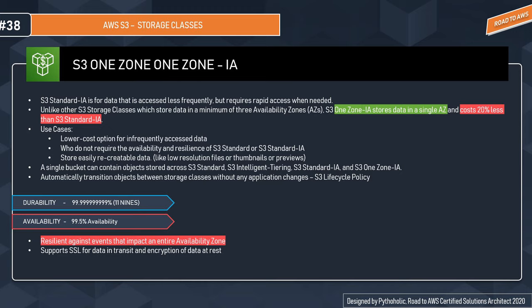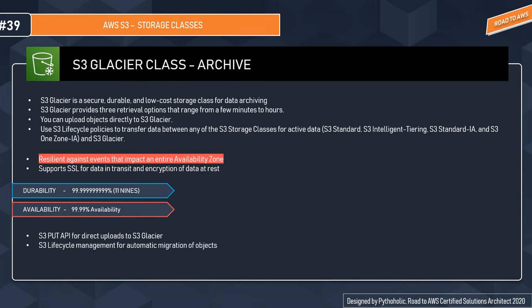S3 Glacier is a secure, durable, and low-cost storage class for data archiving. Archiving refers to data you want to preserve for a longer period — like hospital or government historical data that is rarely accessed for years at a time. S3 Glacier is designed for very low cost and high durability.